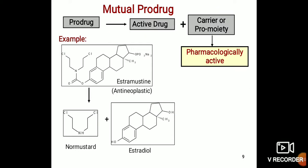Next classification is the mutual prodrug. The prodrug is converted into the active drug plus carrier moiety or pro-moiety, in which the carrier or pro-moiety also has pharmacological activity. The example of a mutual prodrug is estramustine, which is an anti-neoplastic or anti-cancer drug. It is converted into normustine and estradiol, and both compounds have pharmacological actions.